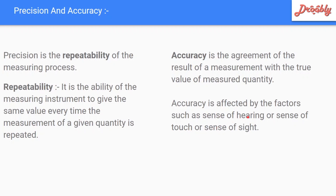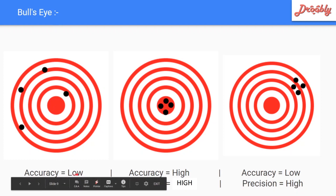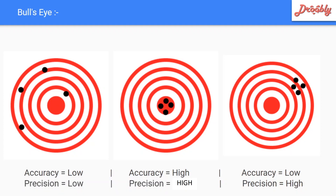Let's look at the next slide. Using a bullseye diagram to explain: in the first case, if shots are spread away from center, it means accuracy is low. Precise means repeatability — if the shots cluster together but are far from center, precision may be high but accuracy is low.